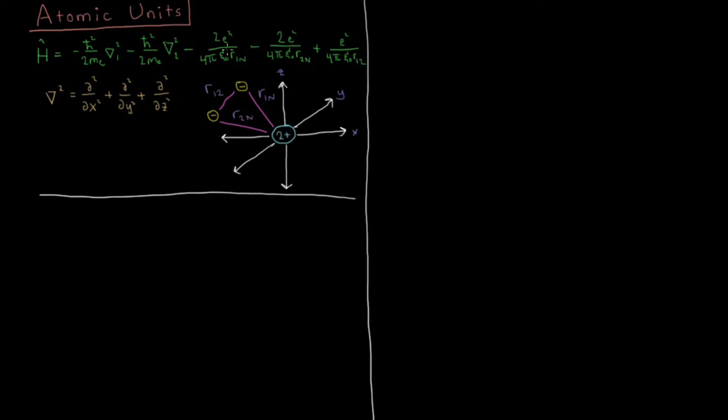Then you have the attraction of electron one to the helium nucleus. Charge of plus two here, charge of minus one there, so it becomes minus two e squared over four pi epsilon naught times their distance. Same thing, distance between electron two and the nucleus and they have an attraction there, negative indicating the attraction. And the two electrons repel each other, so that's a positive or repulsive increasing potential energy, e squared over four pi epsilon naught r12.